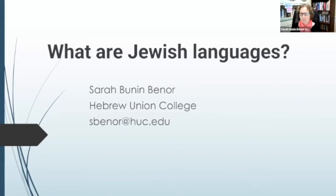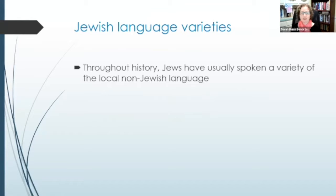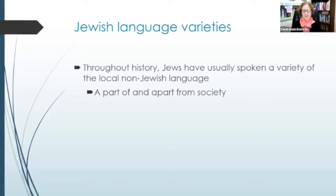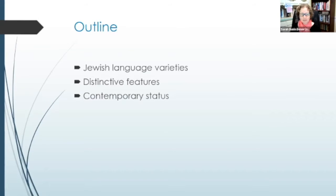We need to find out what even is a Jewish language. Throughout history, Jews have usually spoken a variety of the local non-Jewish language, and this demonstrates that Jews are both a part of and apart from their surrounding society. This is not just a linguistic concept — it is a sociological, historical concept. We also find diversity in Jewish languages. Today we're going to talk about Jewish language varieties, their distinctive features, and next time we're going to talk about their contemporary status.